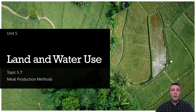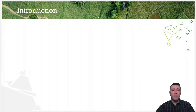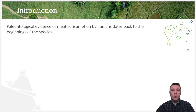Welcome to Topic 5.7, Meat Production Methods. Thanks to the work of paleontologists, we have evidence that tells us that meat, due to its high protein content, has constituted a substantial portion of the diets of even the earliest humans.